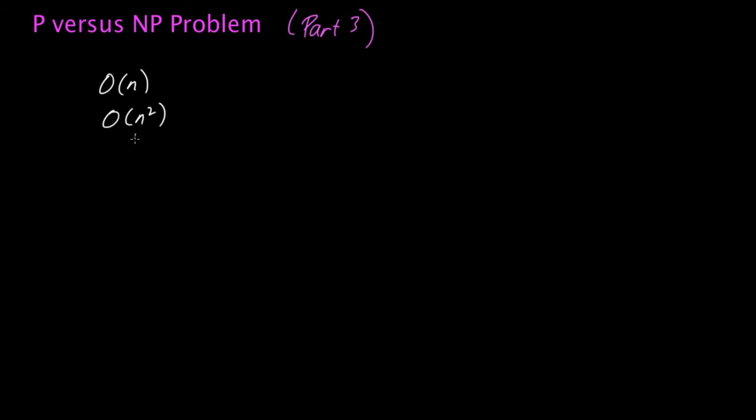And what I ended up saying at the end of the video is that if you in general have a running time of n to the k for some fixed constant value k, an integer k, then we call that running time polynomial, polynomial in the input size, or in this case polynomial in n, where n was the number of digits.